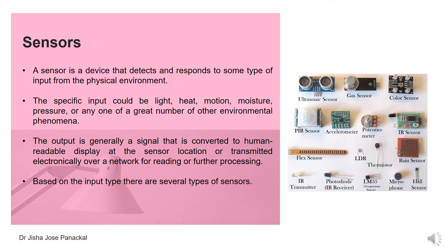These figures are shown just to understand what types of sensors there are as part of input devices — no need to draw these figures. The specific input can be any one of the environmental phenomena, but the output is generally a signal that is converted to a human-readable display at the sensor location, or transmitted electronically over a network for reading or further processing.